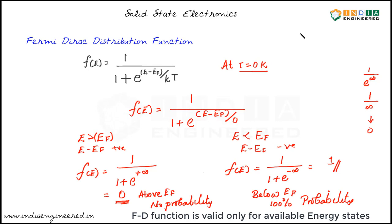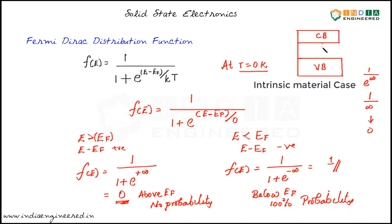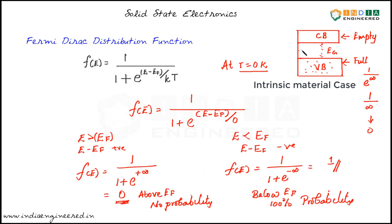If you recall the band structure, we have seen that the valence band and conduction band are separated by an energy gap, and in the case of silicon at T equal to 0 Kelvin, the valence band is completely filled with electrons and the conduction band is completely empty. We can see the same result here — above Fermi level at 0 Kelvin there is no probability of finding an electron, and below Fermi level there is 100% probability. So in the case of silicon, the Fermi level should lie somewhere in the energy gap.